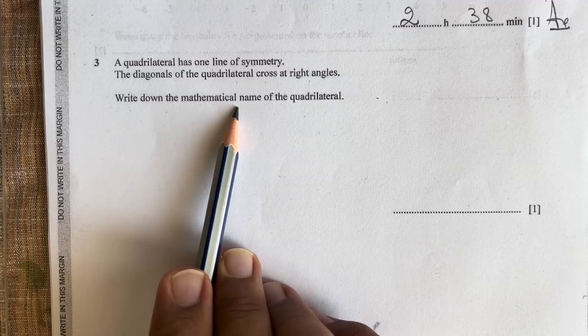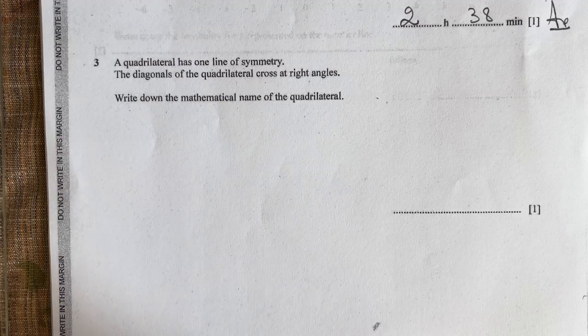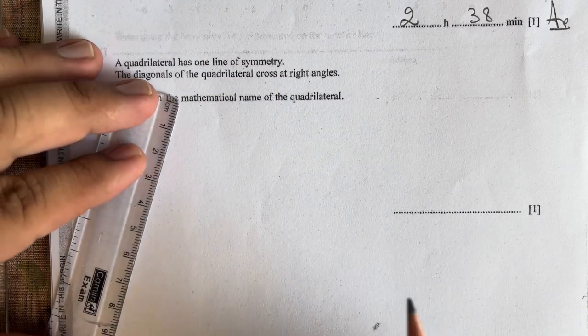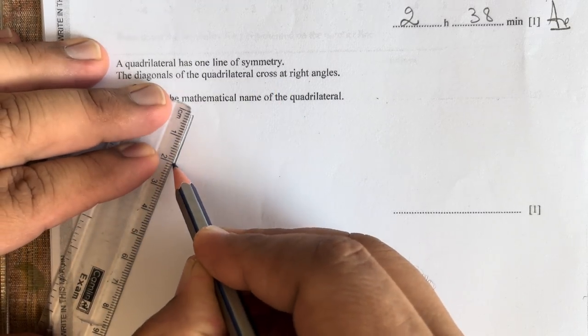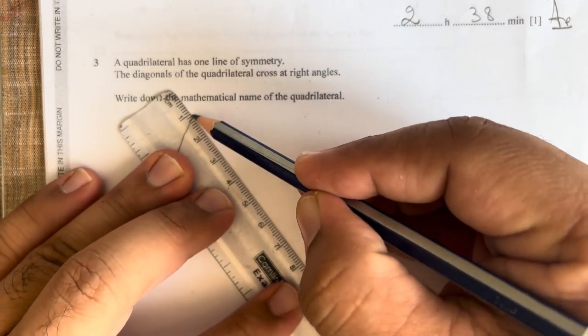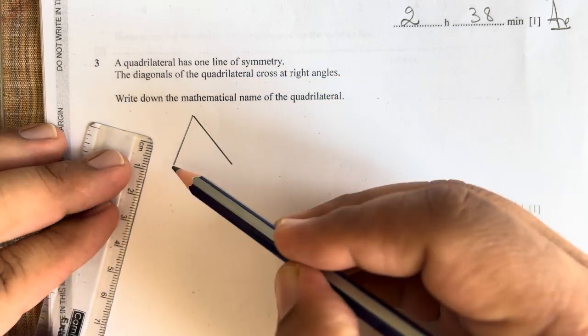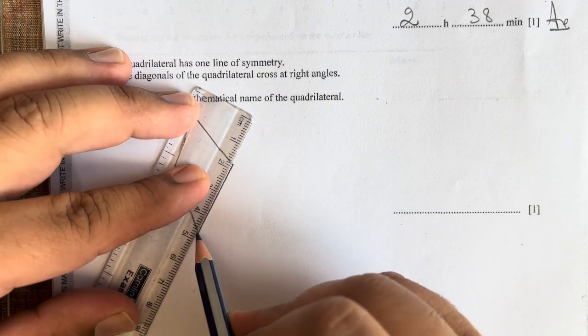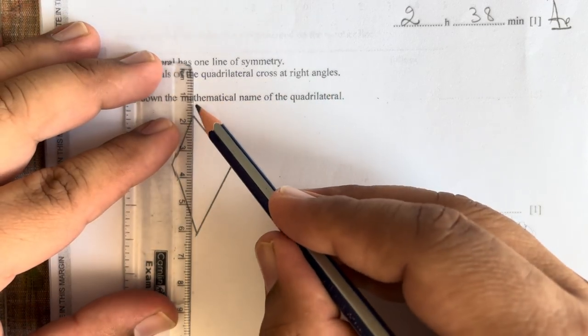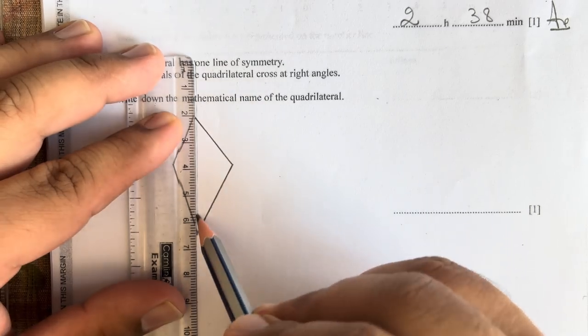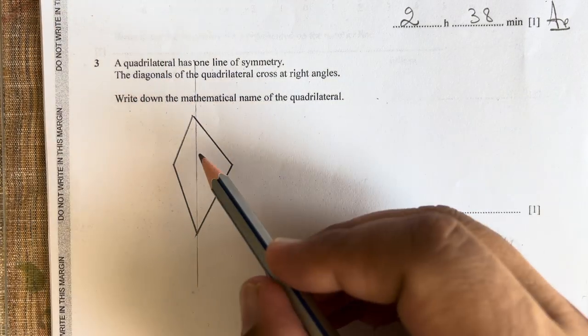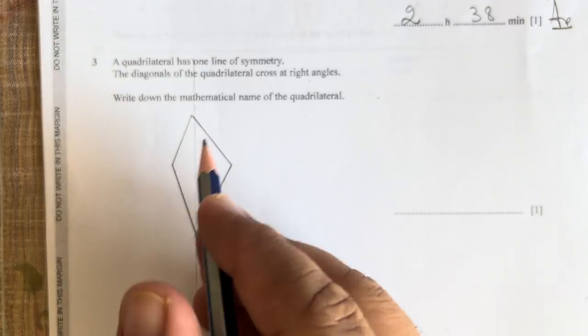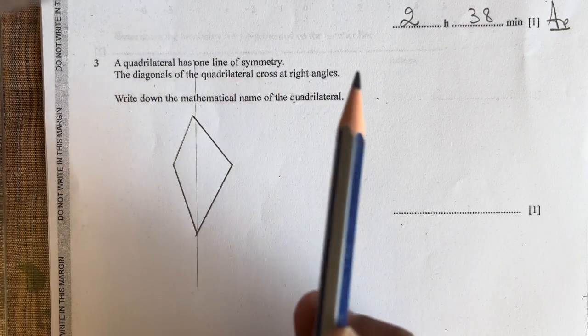A quadrilateral has one line of symmetry. The diagonals of the quadrilateral cross at right angles. Write down the mathematical name of the quadrilateral. We have one line of symmetry, so let us draw the quadrilateral. This is the line of symmetry, the vertical line of symmetry.